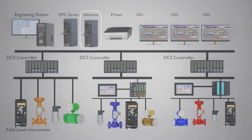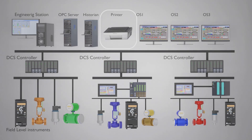Then we have historians. The role of historians is to store historical values. If you want to go back two, three, or four years and check the temperature, pressure, flow, or any specific process parameter value at any point in the past, you can use the historian for that. There is also a printer — if you want to print any trend or graphics, you can use it.